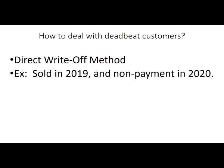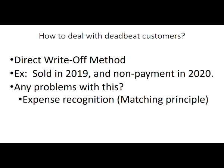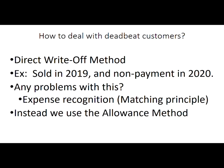An example: a sale occurs in 2019, and we discover in 2020 that we're not going to get paid. Hopefully your spidey sense is going off here, because this is a direct violation of the expense recognition or matching principle, which tells us we must record expenses in the period with their associated revenues. We can't have a situation where we sell something in 2019 and then have an expense associated with that in 2020 for the write-off. That's against the rules of accounting. So be aware of the direct write-off method, know what it is, know why it's not allowed, and let's move on.